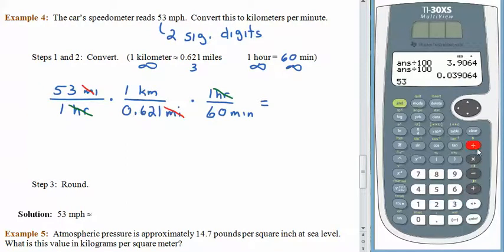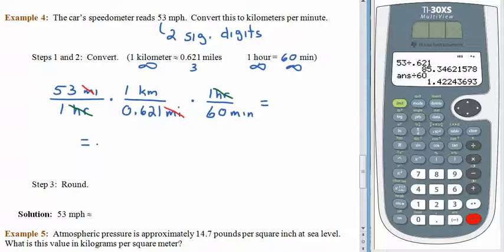Let's see what we have here. 53 divided by .621 is, and then we'll take that answer and also divide by 60, and we end up with this crazy value, 1.422436 stuff stuff stuff. What sort of units do we have on this stuff stuff stuff? Well, that would be kilometers in the numerator, per for the division, minutes in the denominator, just like we wanted to have, kilometers per minute.